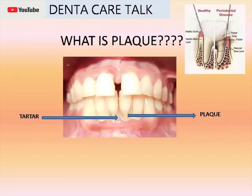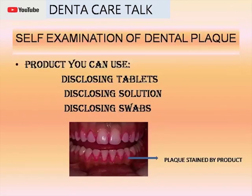If you don't consistently remove plaque from your teeth, it can harden into an even stricter substance called tartar or calculus, which provides a perfect environment for bacterial colonies to grow under your gums and on your teeth. One of the best ways to control plaque is brushing your teeth thoroughly at least twice a day.